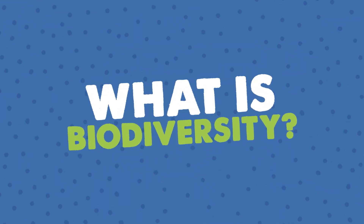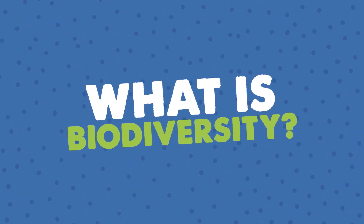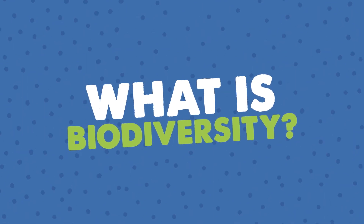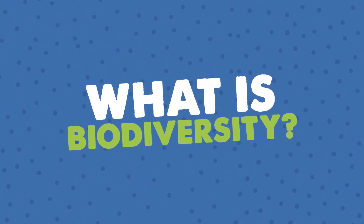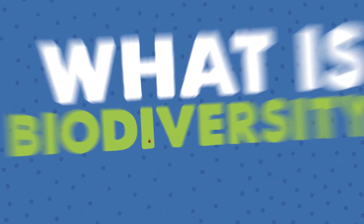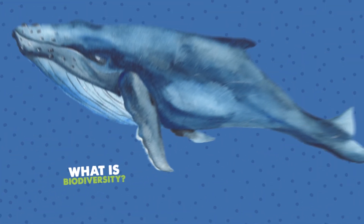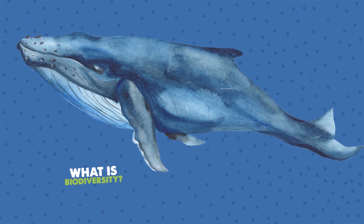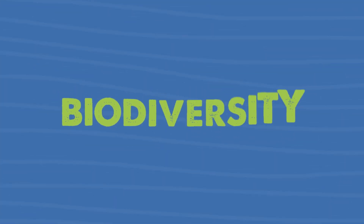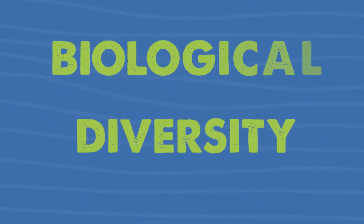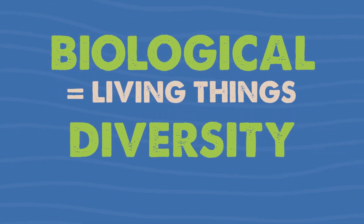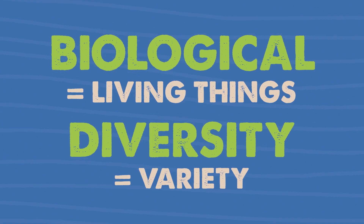What is biodiversity? Biodiversity is the variety of all the living things in the world. It includes all living things, from the tiniest insect in your garden to the biggest whales in the sea. Biodiversity comes from two words: biological, which means living things, and diversity, which means variety.